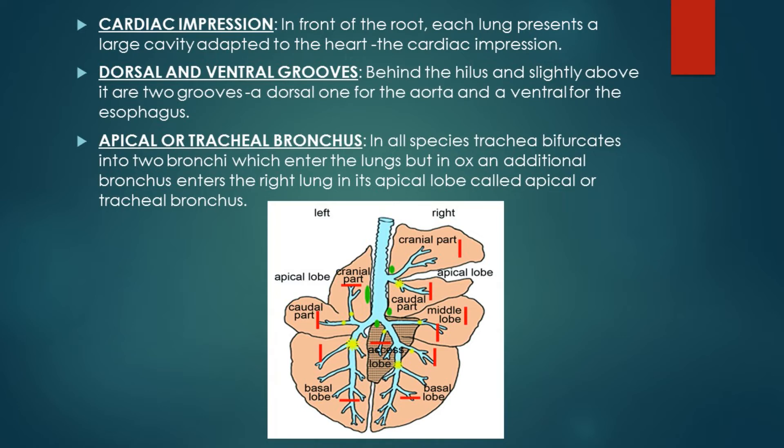In all species, the trachea bifurcates into two bronchi and each bronchus enters one lung. In case of ox, there is an additional bronchus which enters the apical lobe of the right lung, known as the apical or tracheal bronchus. So in ox there is one left principal bronchus and two right bronchi: one principal bronchus and one apical or tracheal bronchus, while on the left side there is only one principal bronchus.